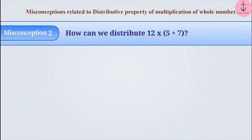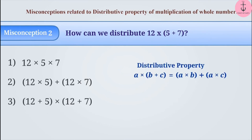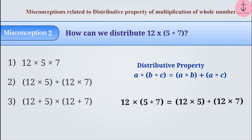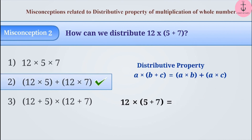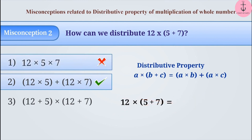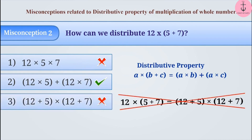Misconception 2: how can we distribute 12 into (5 plus 7)? While using the distributive property, we need to multiply the numbers inside the brackets with the number outside the brackets. With this understanding, option 2 is the correct answer. Due to confusion, sometimes the number outside the brackets is simply multiplied with only some numbers inside — this is incorrect. Similarly, writing the plus sign between numbers inside the bracket and the multiplication sign outside is also incorrect.